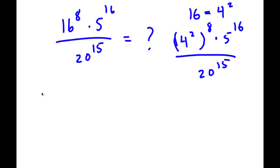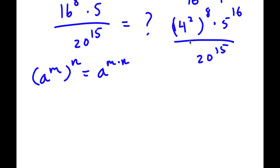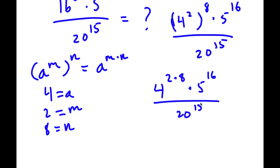Now if I have something in the form a to the power of m to the power of n, this is equal to a to the power of m times n. So 4 squared to the power of 8 — we can think of 4 as a, 2 as m, and 8 as n. So we have 4 to the power of 2 times 8, times 5 to the power of 16 divided by 20 to the power of 15.